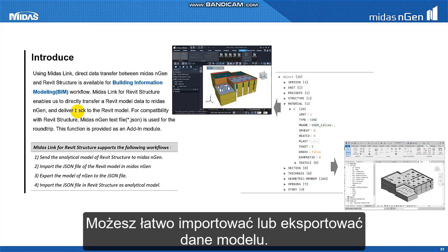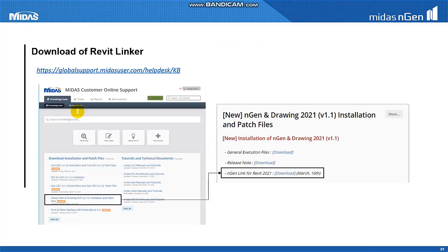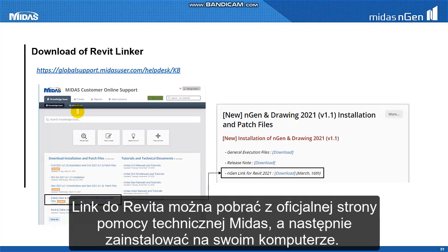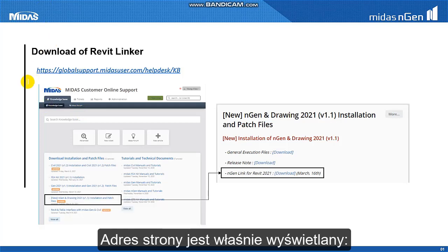Using Midas Link, you can import or export the model data easily. Engine Link for Revit can be downloaded and installed on the Midas Global Support website. Please refer to the address and location map shown on screen.